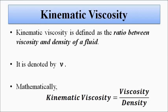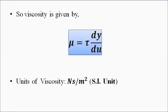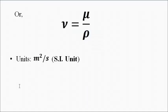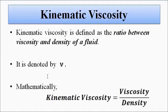There is another thing associated here, which is kinematic viscosity. The kinematic viscosity of a fluid is defined as the ratio between the dynamic viscosity and the density of the fluid. It is denoted by the symbol nu. Mathematically, kinematic viscosity nu equals mu divided by rho. The unit of kinematic viscosity is meter squared per second. In simple terms, kinematic viscosity is the ratio between viscosity and density of the fluid.